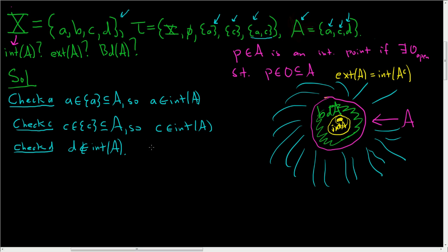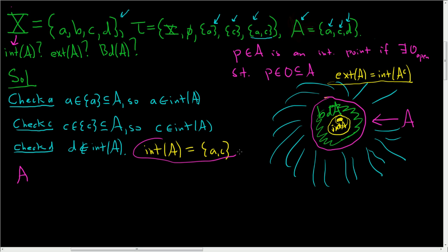So the interior of A is the set containing A and C. Now we have to find the exterior of A. Keep in mind the exterior of A is the interior of the complement. Let's write down the complement of A. X is ABCD, A is ACD, so the complement is just little b.